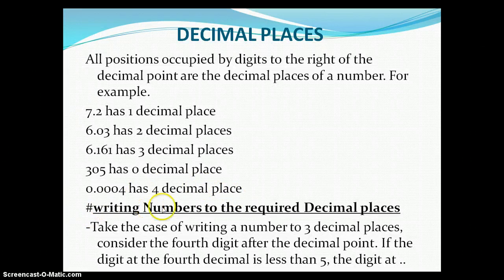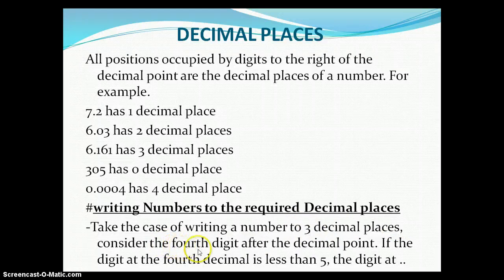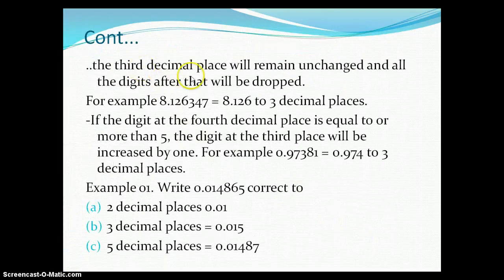Now let us see how you can write a number to a required number of decimal places. Take the case of writing a number to three decimal places. You consider the fourth digit after the decimal point. If the digit at the fourth decimal place is less than five, then the digit at the third decimal place will remain unchanged, and all digits after that will be dropped.